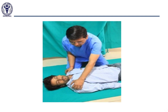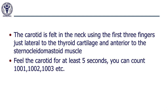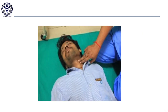If the victim is unresponsive, one must check the carotid pulse for at least 5 seconds before you confirm cardiac arrest. The carotid pulse can be checked by placing your fingers just lateral to the thyroid cartilage in the groove anterior to the sternocleidomastoid muscle. This should be done for at least 5 seconds before you confirm cardiac arrest.